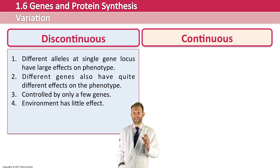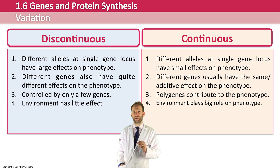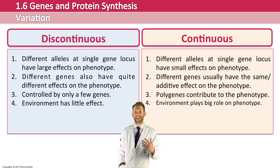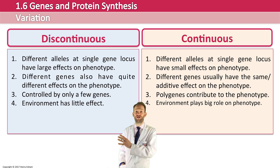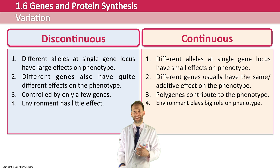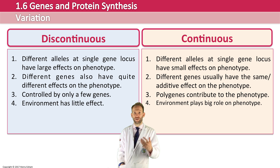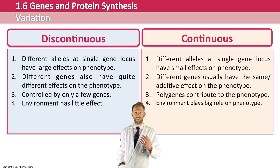Continuous variation, though, is usually different alleles at a single gene locus having small effects on the phenotype. Different genes usually have the same or often additive effect on the phenotype — a cumulative effect of many genes adding to the final phenotype. This is what we call polygenic: lots of genes contributing to the final phenotype. Also, the environment can play quite a big role in the final phenotype with continuous variation.